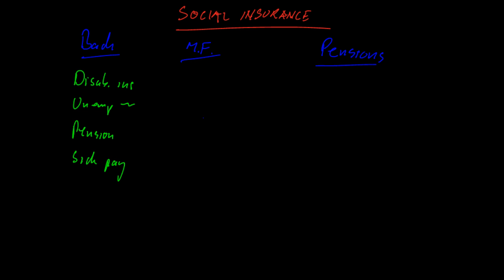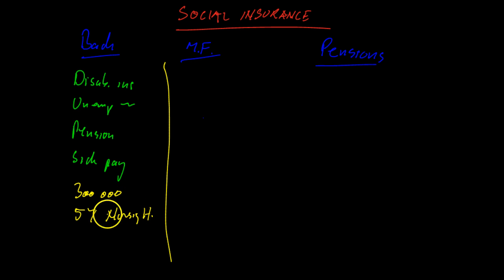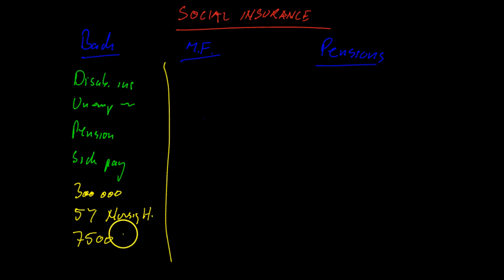Let's give one example. For pensions, maybe you have to save as much as $300,000 to cover the cost of five years in a nursing home. In order to save $300,000 — because that's roughly what it costs, maybe even more — you would have to save about $7,500 a year in order to cover those costs. So it's a big thing.